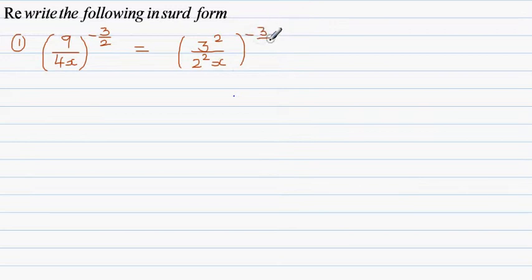The first rule is: when you've got an index bracket and an index, multiply the indices. So this is 3 to the power 2 times 3 halves, divided by - the same applies here - the power of x is 1, the power of 2 is 2, so this negative 3 halves you need to multiply to both expressions: 2 to the power 2 times negative 3 halves, times x to the power 1 times negative 3 halves.